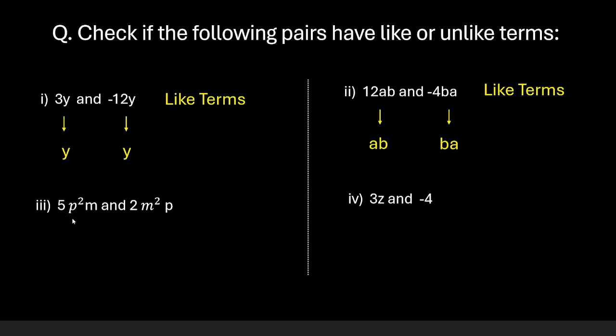Let us go to the third part. The variables here are p and m and here we have m and p. So although the variables are same, let us look at the powers. p has a power of 2, m has a power of 1 but over here m has a power of 2 and p has a power of 1. So the variables are same but the powers are not same. So this is a case of unlike terms.